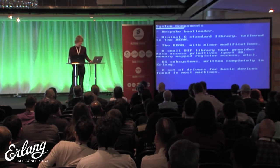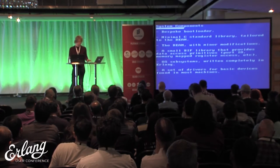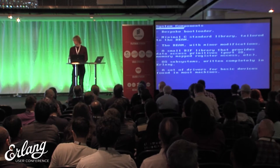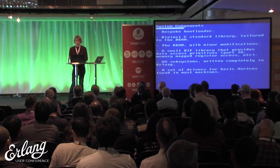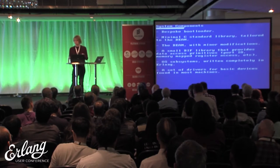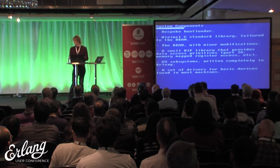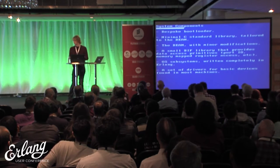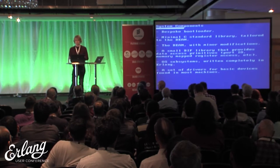There are basically six major components to the system: the bootloader; the C standard library, which provides a very minimal Unix-ish environment that just allows us to run the BEAM; some BIFs that allow us to interact with hardware — port IO, this sort of stuff; and then OS subsystems and drivers on top of that. Those last two are Erlang.